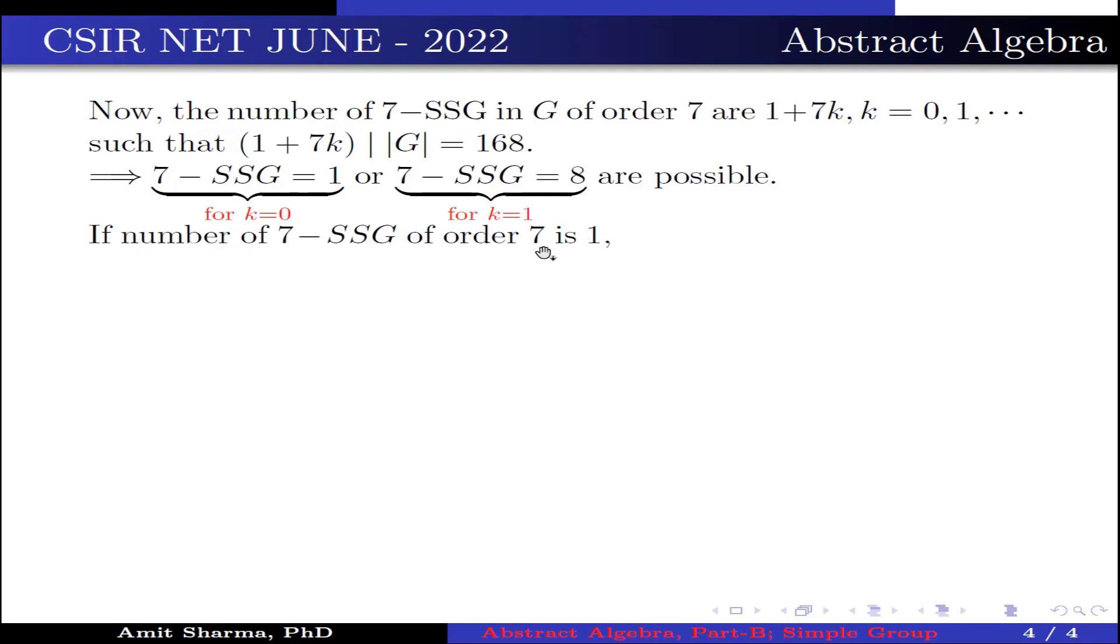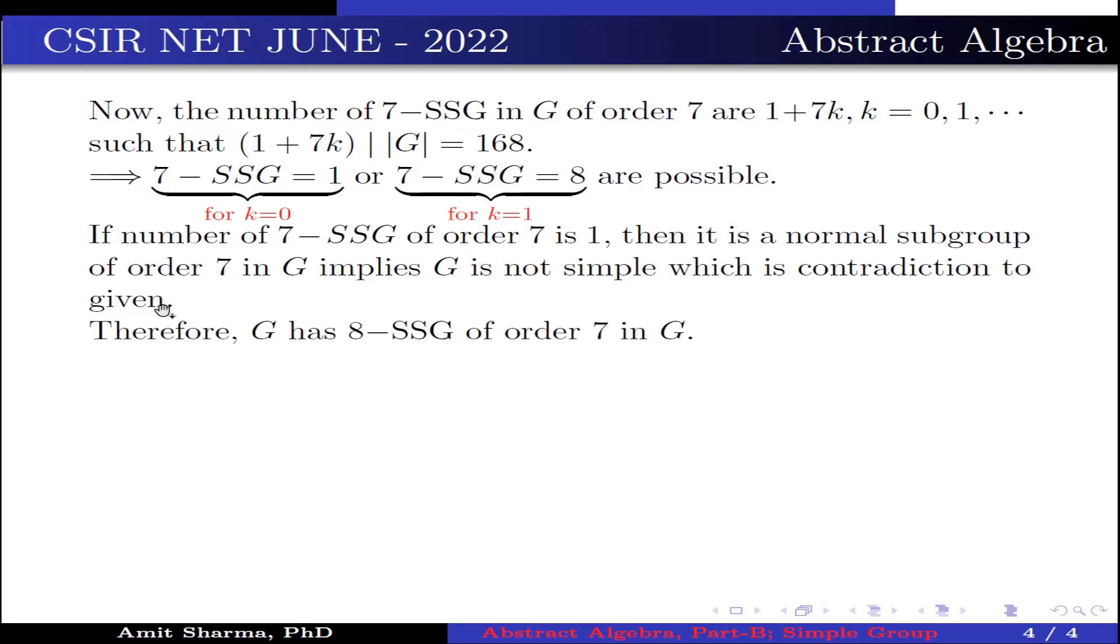If number of 7-SSG of order 7 is 1, then it is a normal subgroup of order 7 in G. This implies G is not simple, which is contradiction to the given, because G is given a simple group. Therefore, G has 8-SSG of order 7 in G.